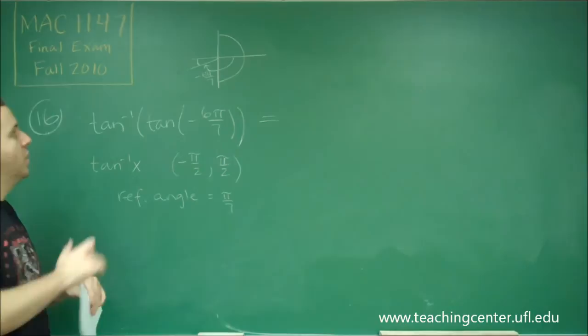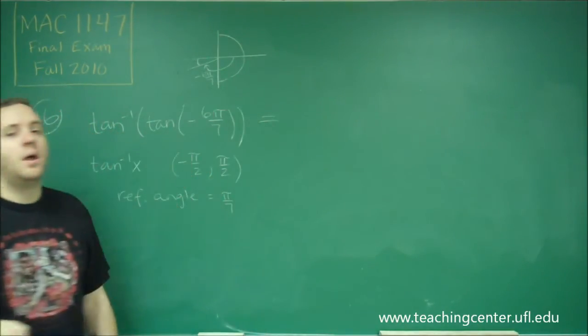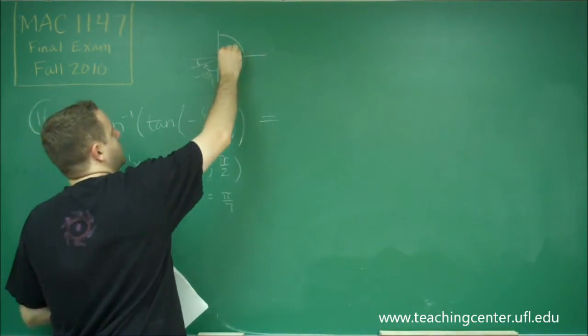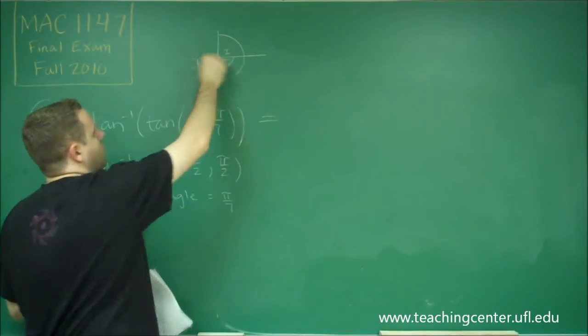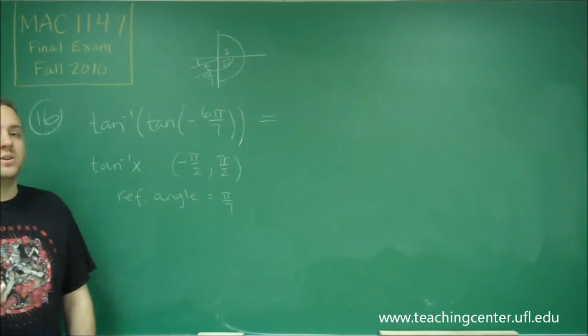So where we put this now has to be in between negative pi over 2 and pi over 2, but it has to be where tangent would have been positive. And if we only have quadrant 1 and quadrant 4 to work with, where is tangent positive? Tangent positive there in quadrant 1.